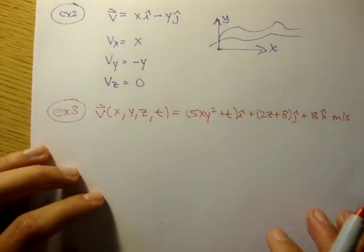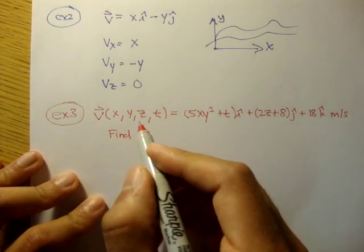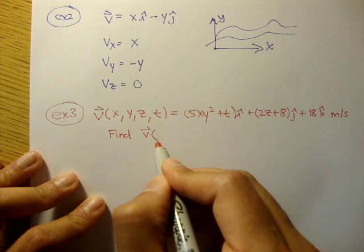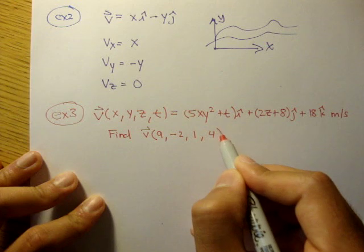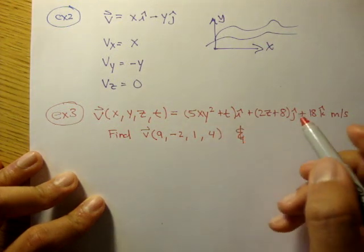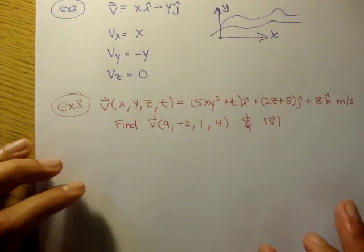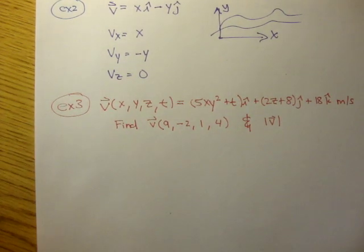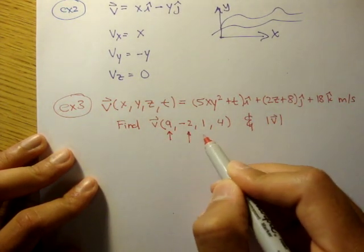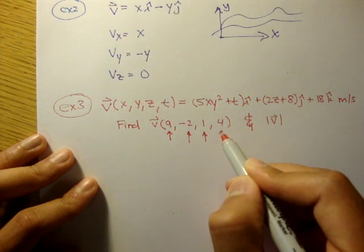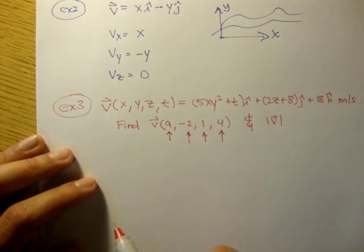And the question is asking, find the velocity at 9, negative 2, 1, 4, and the magnitude of the velocity field. So, the very first thing, let's identify our x, y, z, and t. This would be our x, this would be our y, this would be our z, and this would be our t, t time. Everything's in meters, and the time is in seconds.